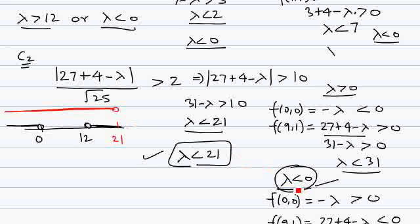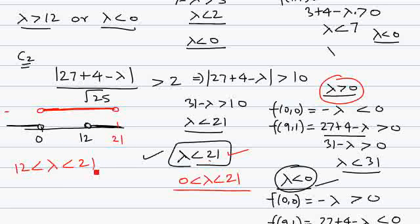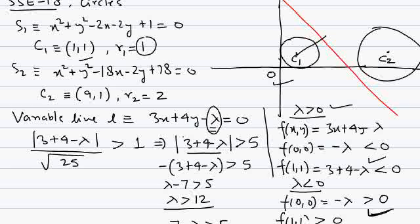The combined solution is lambda less than 21 but greater than zero — and since lambda less than zero was not possible — combining all cases, the final solution is lambda lies between 0 and 21. Plotting both conditions together, the common solution is lambda lies between 12 and 21. To understand this properly, you may need to listen to it twice.